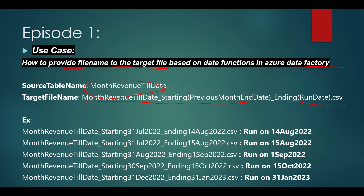The file name should be the table name, underscore 'starting', then the previous month end date. For example, if today is August 14th and we run the pipeline today, the file name should be the table name underscore starting 31st July — because 31st July is the previous month end date for August. Then underscore 'ending', then today's run date, then underscore dot CSV.